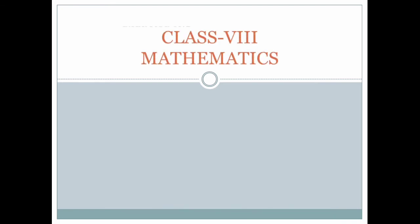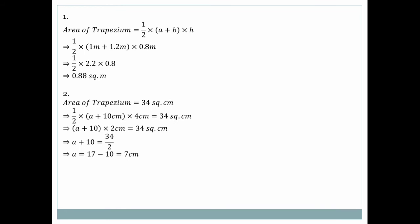Exercise 11.2, question number one: Area of trapezium = half into (a + b) into h, where a and b are the parallel sides and h is the distance between them. So: half × (1 meter + 1.2 meter) × 0.8 meter = half × 2.2 × 0.8 = 0.88 square meter.